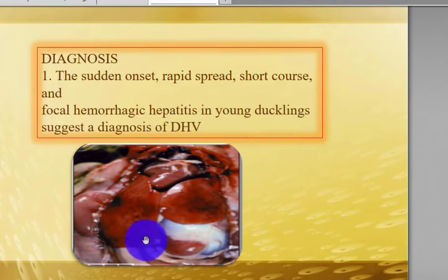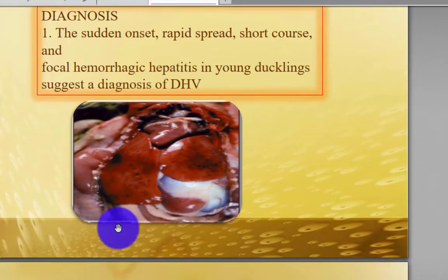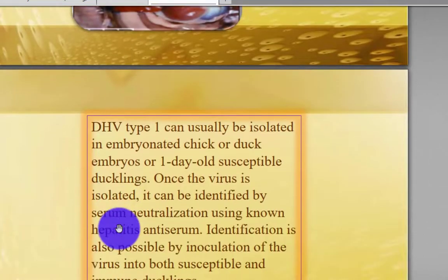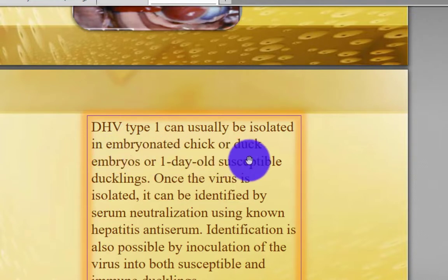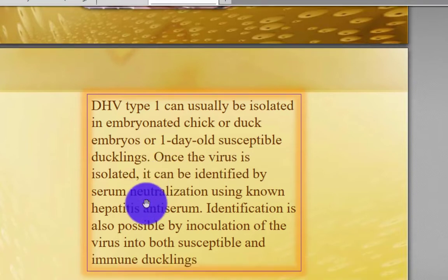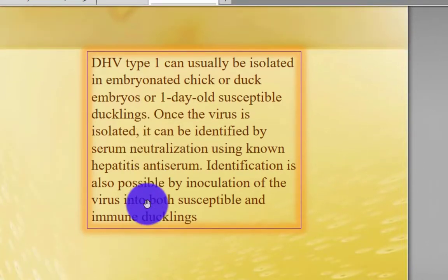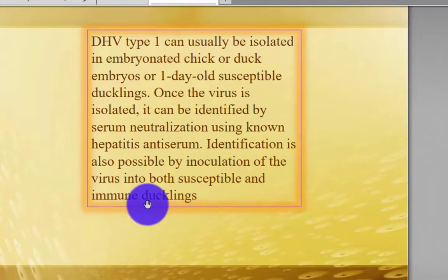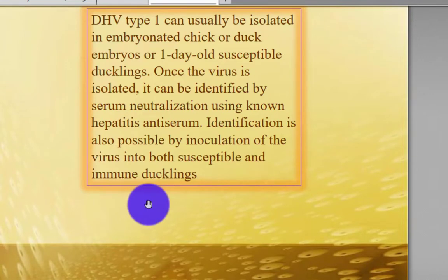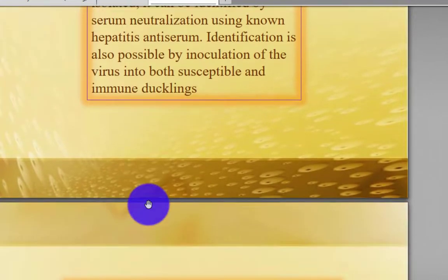For diagnosis, Duck Hepatitis Virus Type 1 can usually be isolated in embryonated chicken eggs, duck embryos, or one-day-old susceptible ducklings. Once isolated, the virus can be identified by serum neutralization using known hepatitis antiserum. Identification is also possible by inoculation of the virus into both susceptible and immune ducklings.